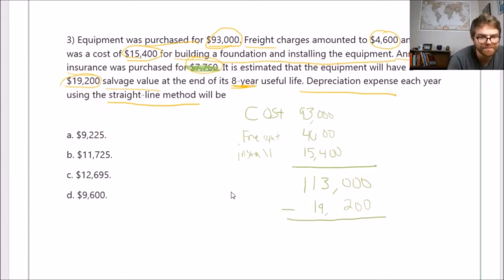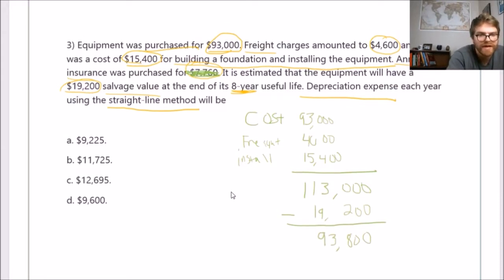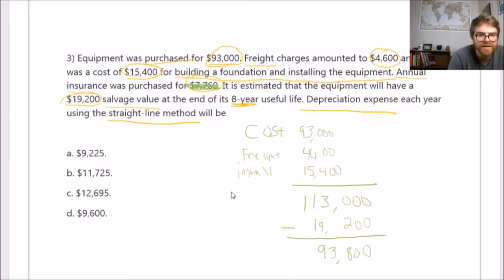The question's asking what's the depreciation expense each year—annual depreciation expense. All we do is, after we take out our salvage value, we divide by the 8-year life, and that's going to equal $11,725. That is your depreciation expense every year.